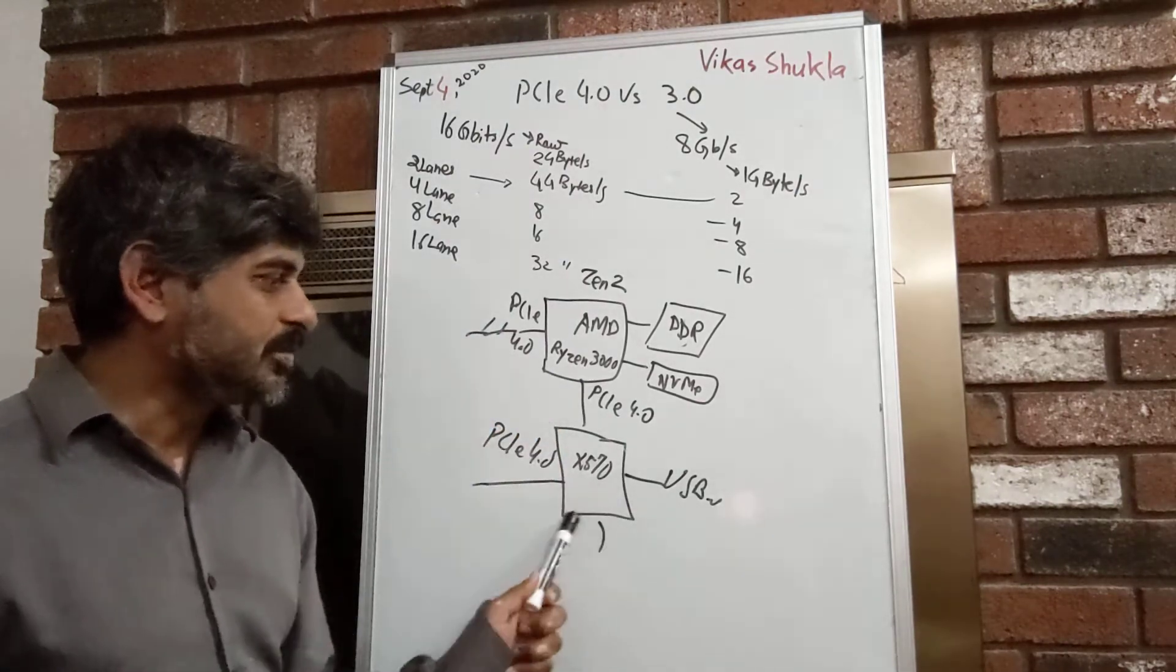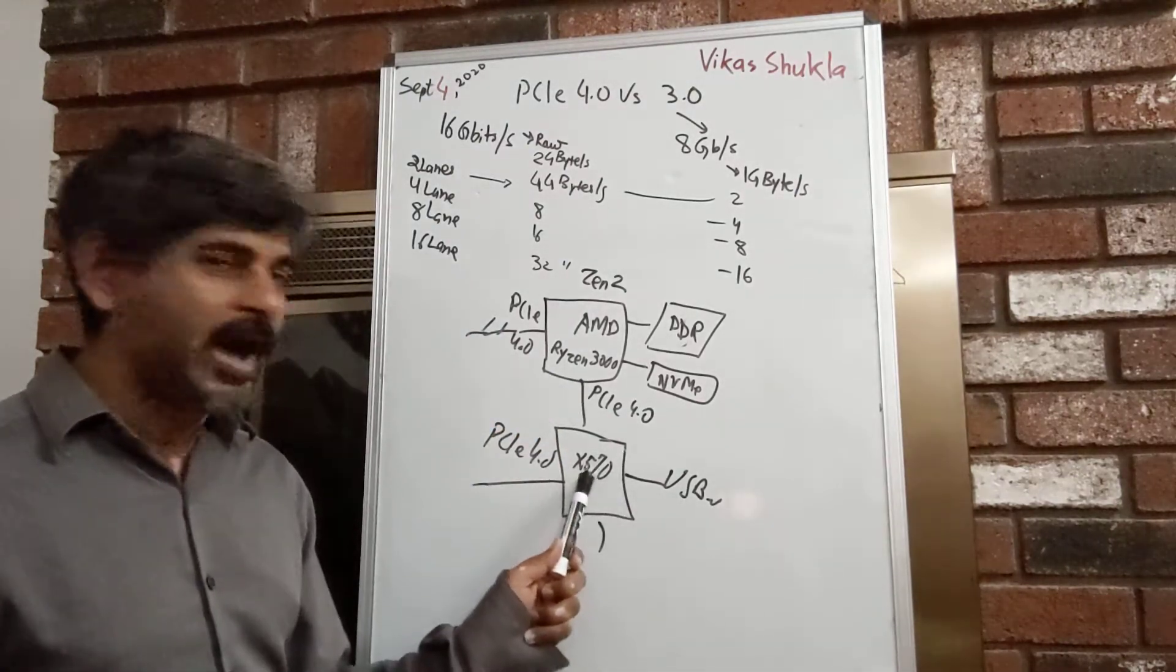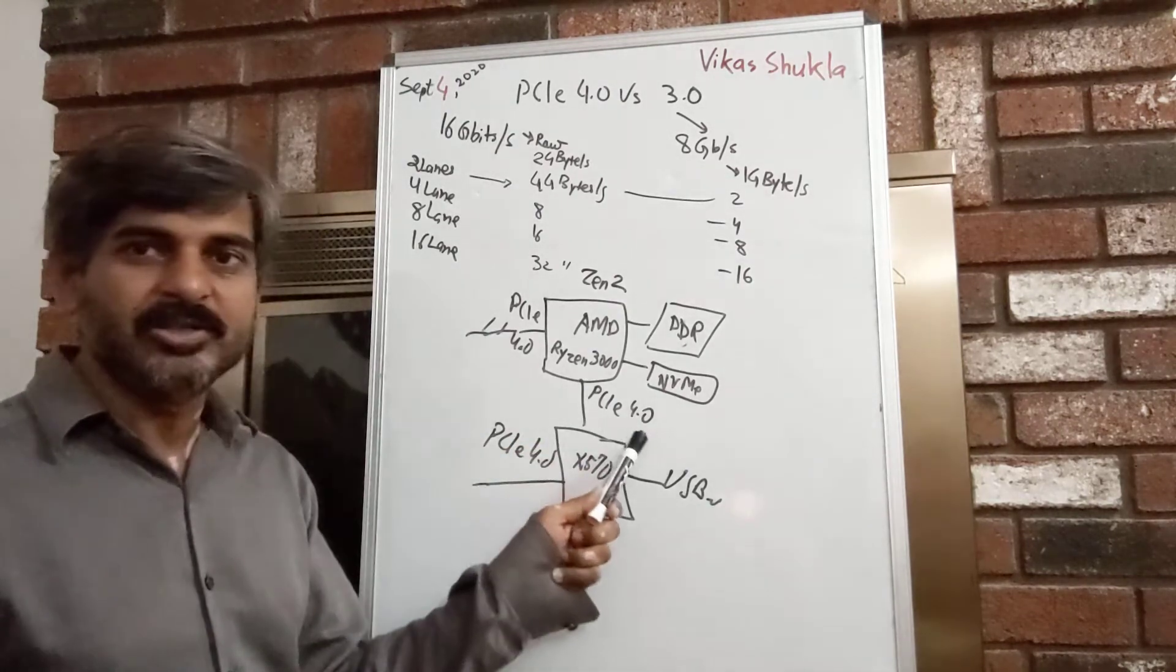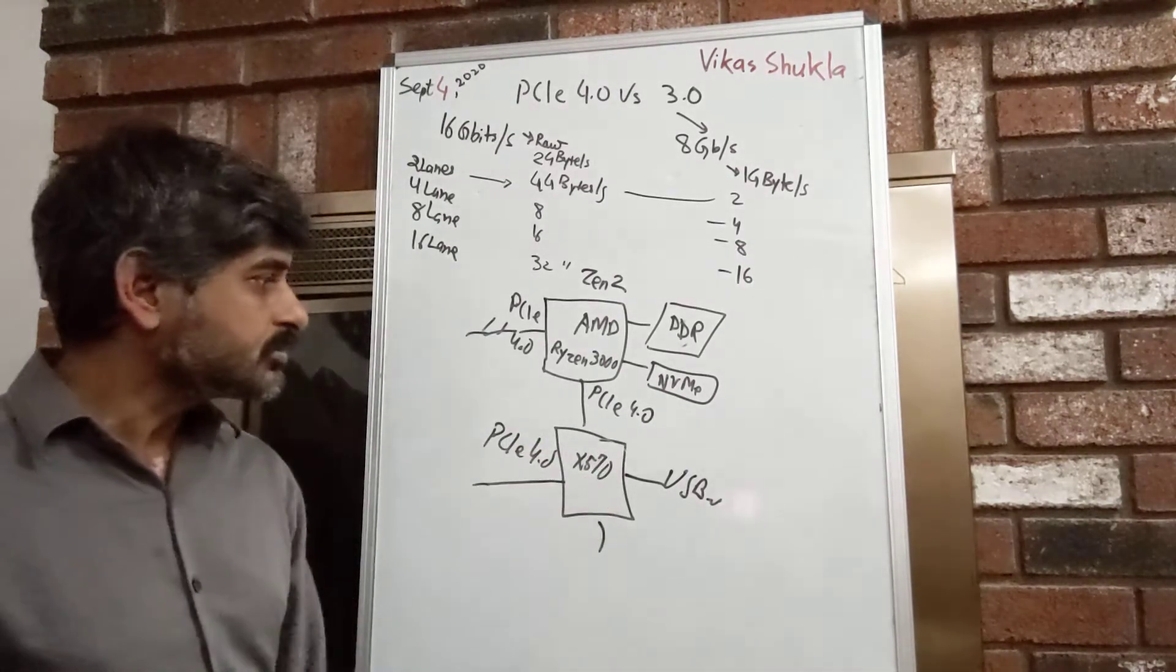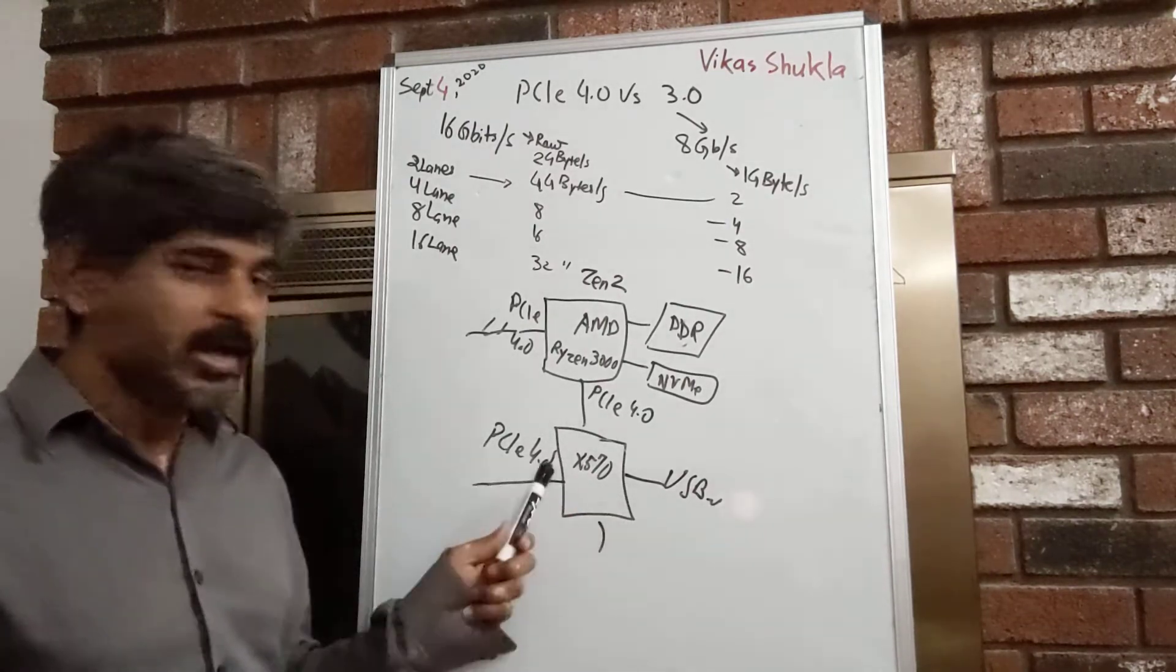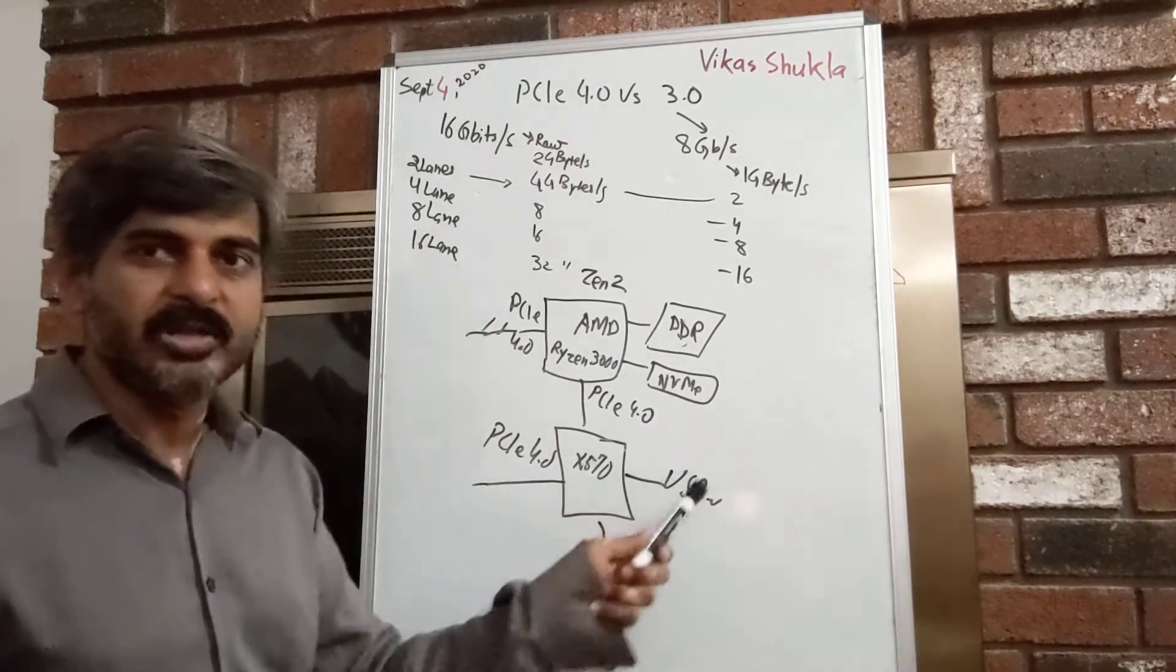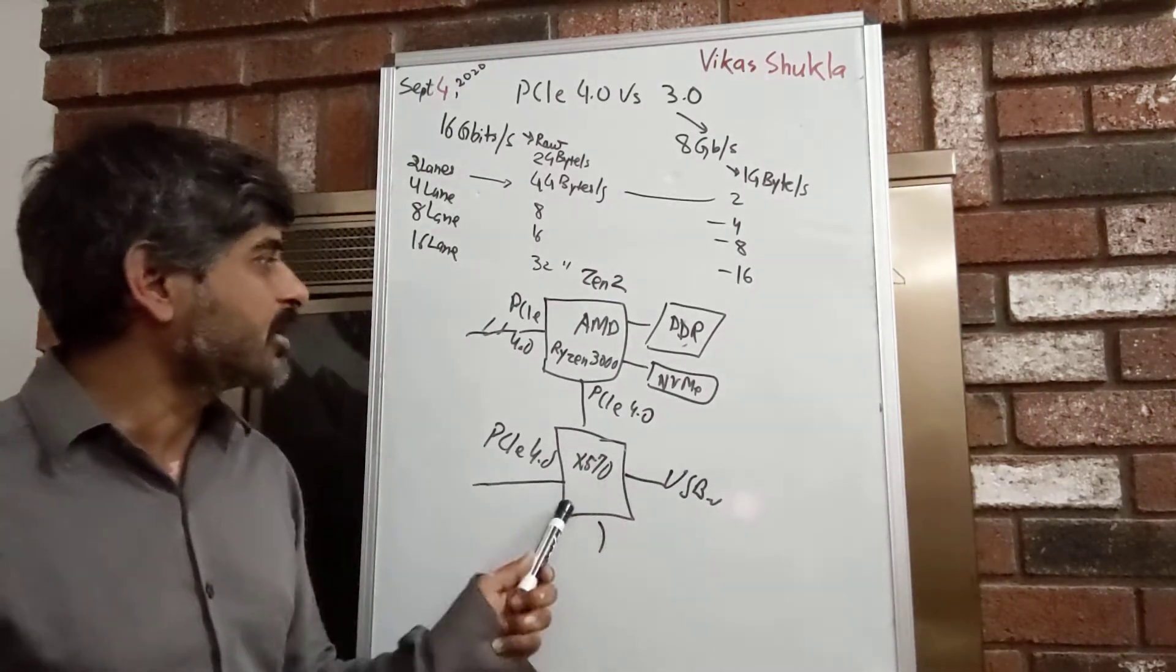And then we have a chipset, like an X570 chipset, that is hooked on the PCI Express 4.0. Now, out of this chipset, then we have some more PCI Express 4.0 links. But there are other things, for example USB and other things that we are not concerned about.